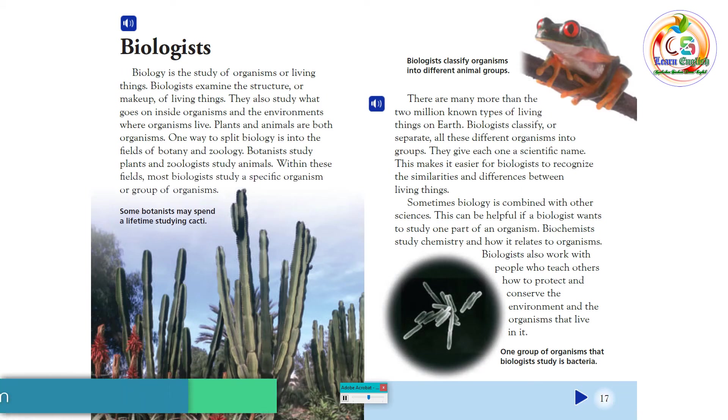Sometimes, biology is combined with other sciences. This can be helpful if a biologist wants to study one part of an organism. Biochemists study chemistry and how it relates to organisms. Biologists also work with people who teach others how to protect and conserve the environment and the organisms that live in it.